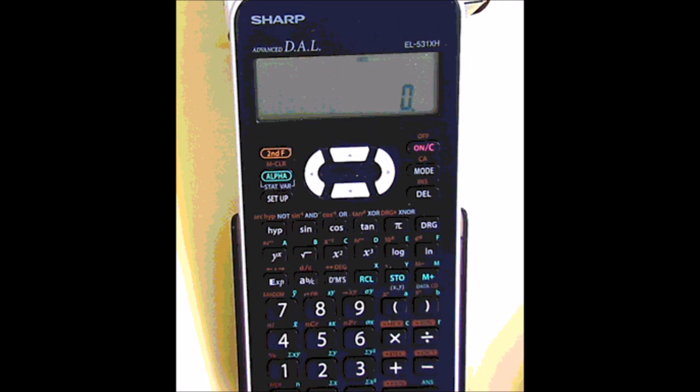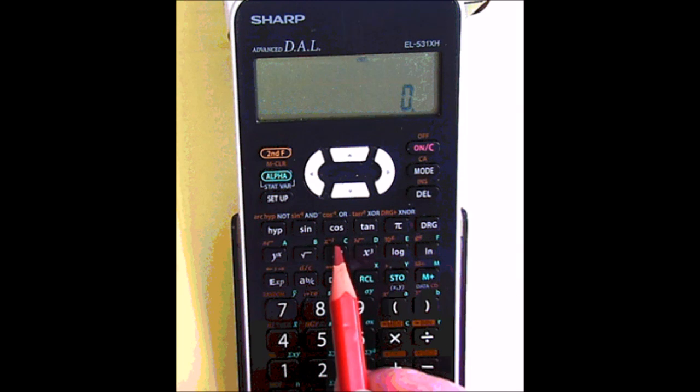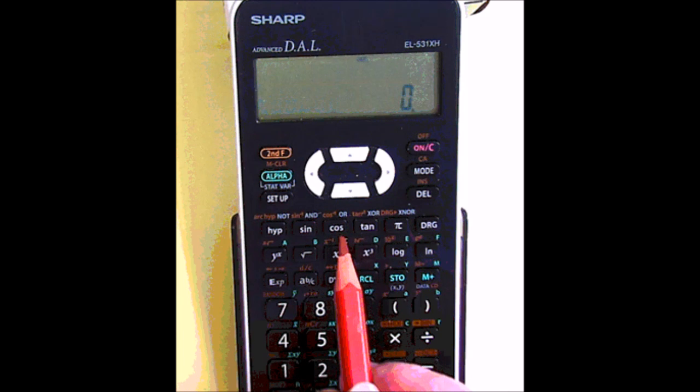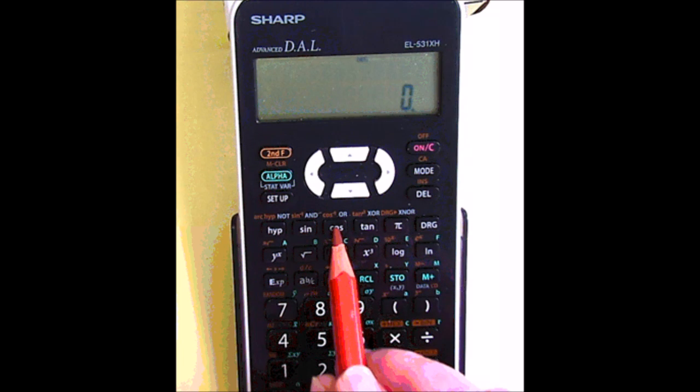Here I'll demonstrate how to use a Sharp scientific calculator to work with degrees, minutes, and seconds. Suppose I have an angle of 57 degrees and 45 minutes to work out the cosine.